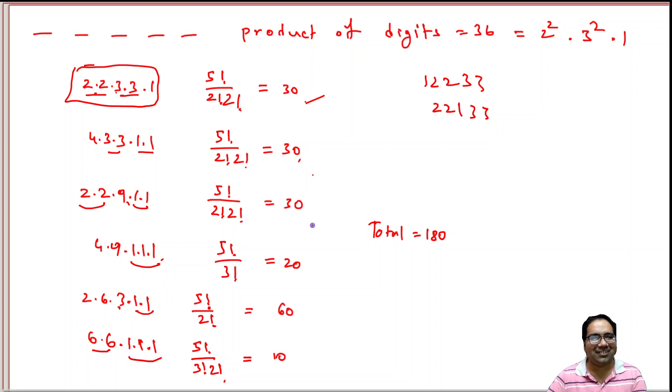So we have got 30 here, 30 here, 30 here, 20 here, 60 here, 10 here. So what is the total? The total is 60 plus 30 is 90, 120, 150, and 180. So 180 is our correct answer.